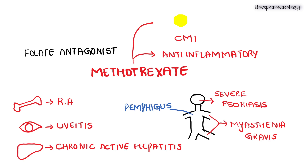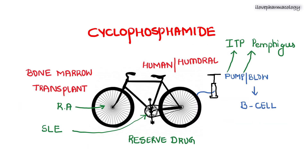Next, moving on to another cytotoxic drug — cyclophosphamide. There is a graphical representation showing a cycle and an accessory, like a cycle pump or blow. The mnemonic: on the seat, humans sit — so cyclophosphamide mainly inhibits the humoral activity. The blow stands for B — so it mainly inhibits the B-cell activity.